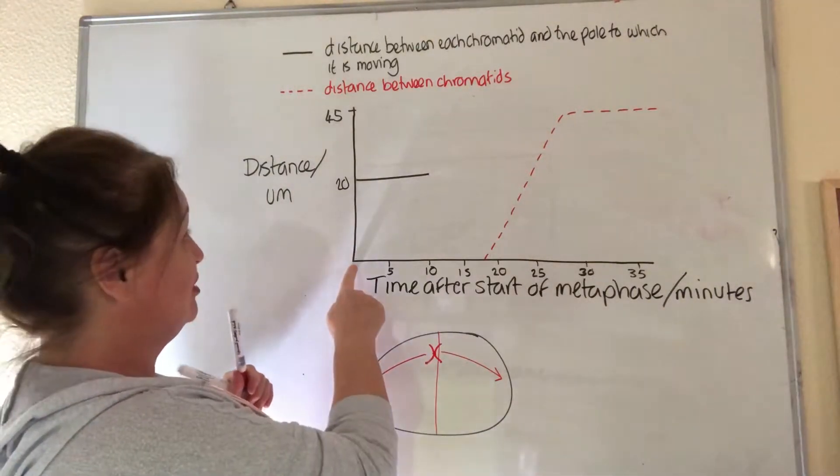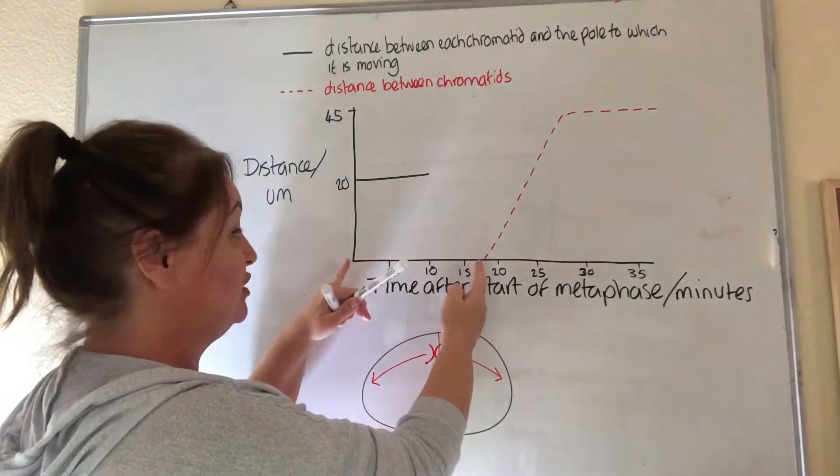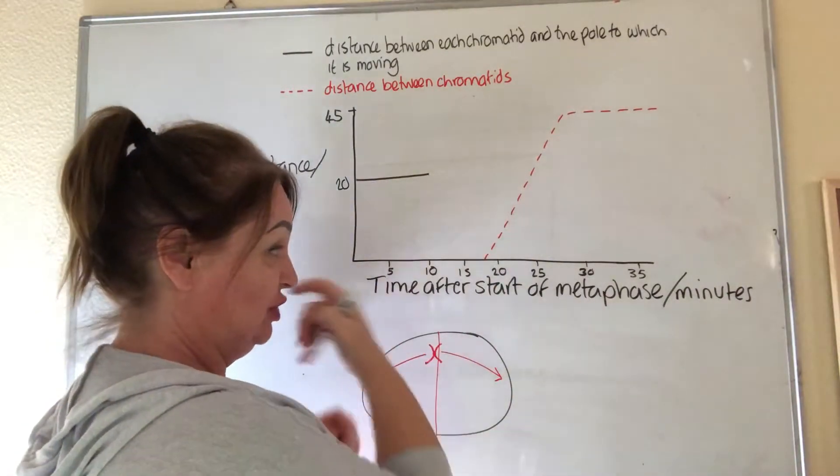there is zero distance because they are together. It's only when we're this far through metaphase that they start to separate.